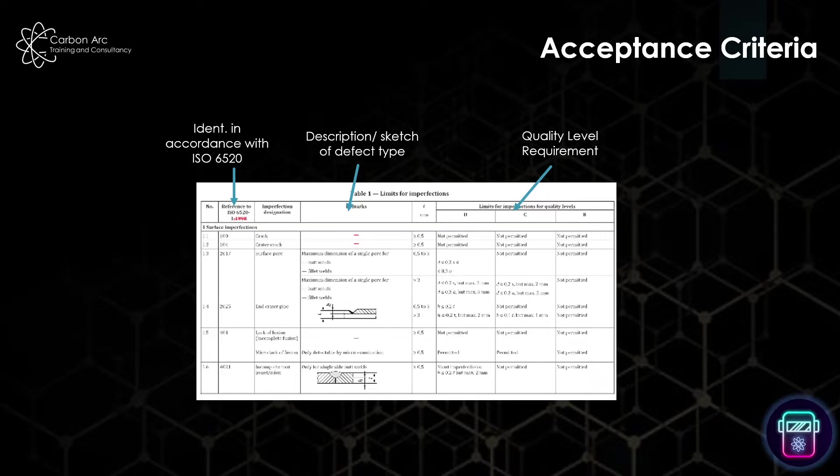In accordance with 5817, you have three quality levels - B, C, and D, with B being the most stringent. You see down there there's a lot of non-permitted, whereas as we head towards D it gets a little bit easier.